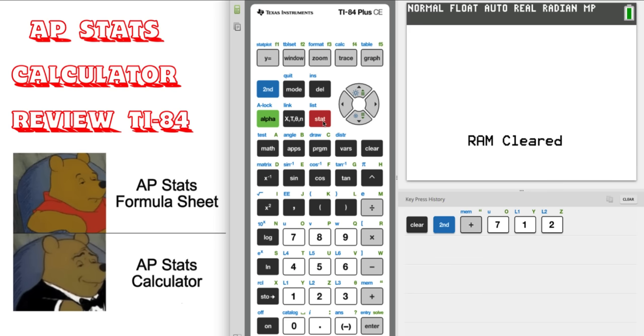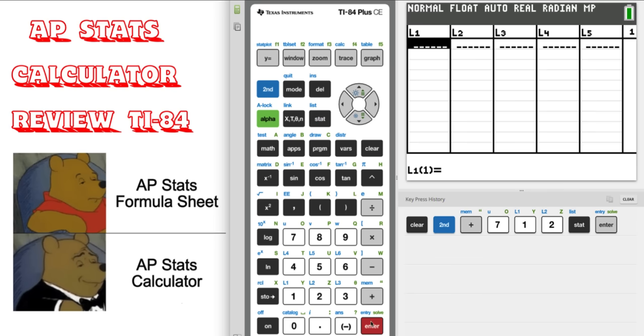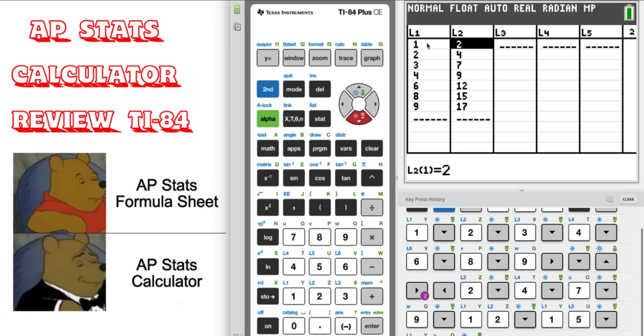Next thing we're going to do, we're going to go into where it says stat and learn how to use our lists. After we reset the memory, the lists should be cleared. Let's put some numbers in it. So I've added some numbers to L1 and L2. Remember you can go back through and you can type over any number if you want to. If you want to change the number to a different one.